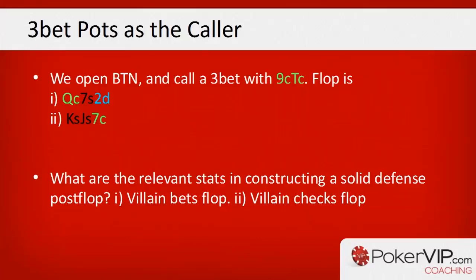If we see our opponent has a very high flop c-bet frequency, we tend towards floating much wider — even with hands that don't include good backdoors. If our opponent has a reasonably low flop c-bet frequency, we might still float nine-ten of clubs because it has good backdoors, but we're certainly not floating everything. Assuming the turn comes something like a king or a club, we then think about how we can continue. If it comes an offsuit jack and we pick up an open-ender, we consider whether to raise the turn or just call.